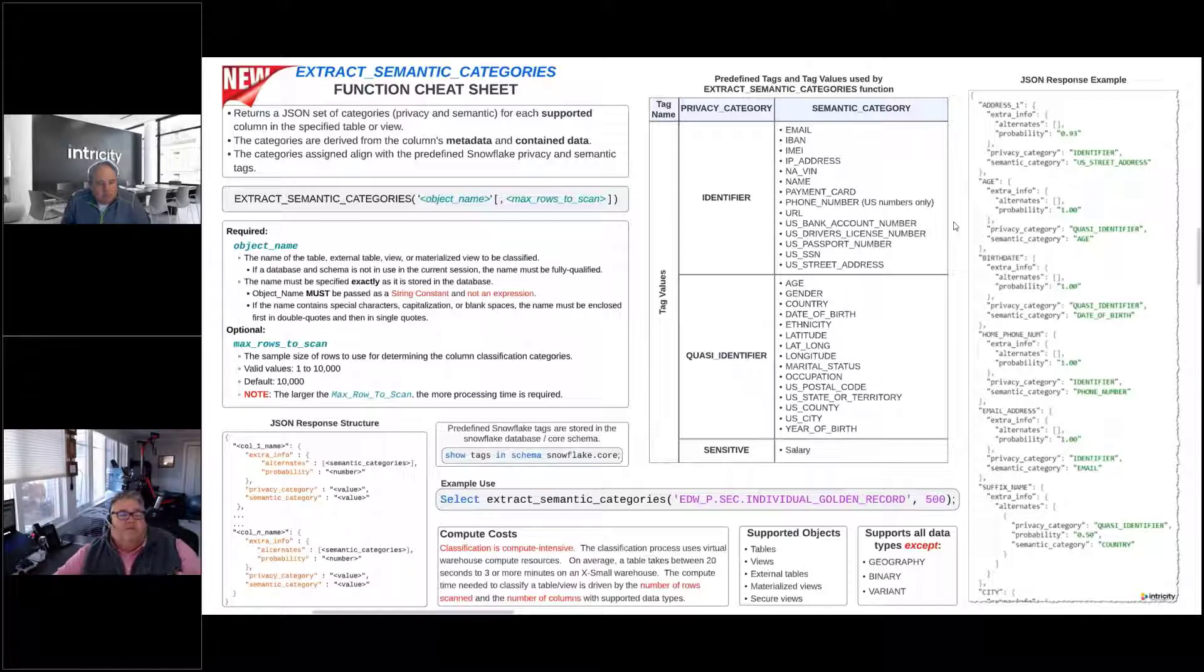One of the things is we also want to be able to classify our data. We've talked about this in the past couple of months: how do we classify the data? Snowflake has added this new function that allows us to automatically look at this and try and classify some of the data that we've got inside of Snowflake.